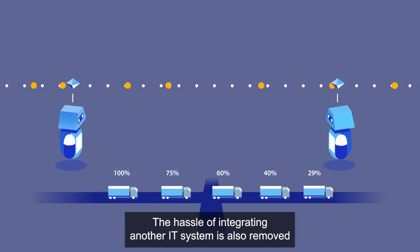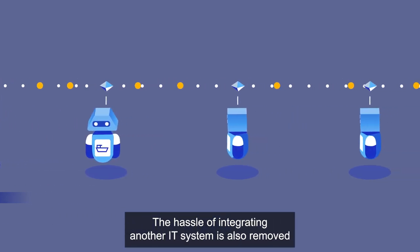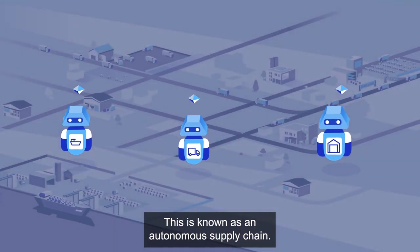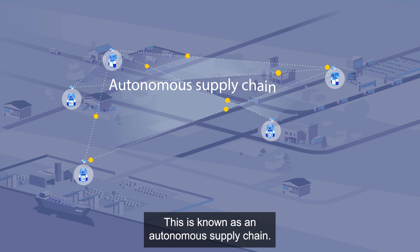The hassle of integrating another IT system is also removed as agents can be added onto existing systems. This is known as an autonomous supply chain.